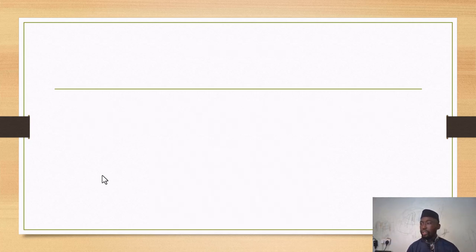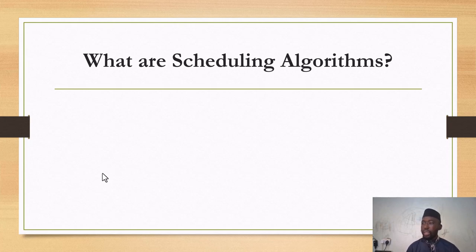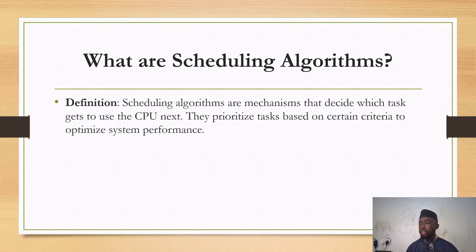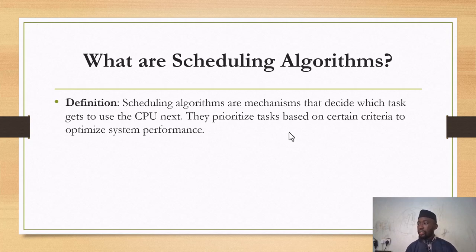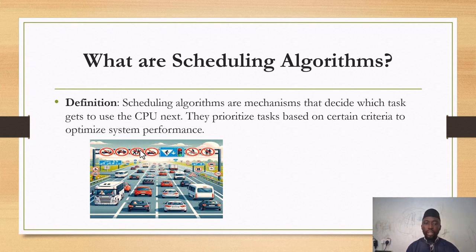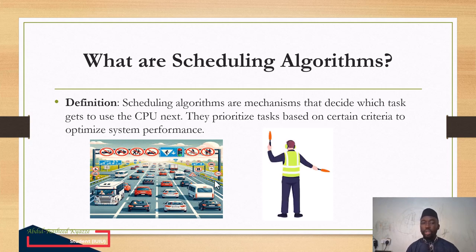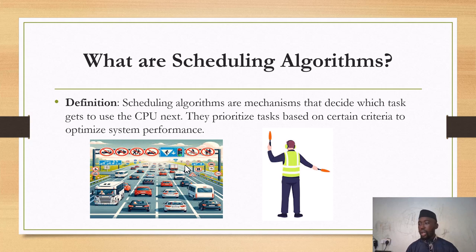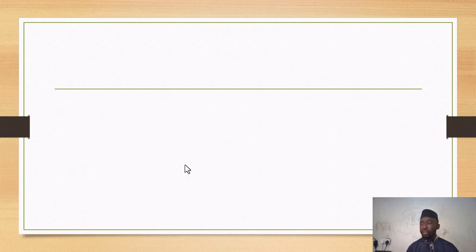There are different types of scheduling algorithms. But before that, we would like to know what scheduling algorithms are with at least a broad knowledge. Scheduling algorithms are mechanisms that decide which task gets to use the CPU next. They prioritize tasks based on certain criteria to optimize system performance. Take an example of a traffic jam — a traffic officer decides which car or vehicle takes which route. That is also how jobs are categorized or scheduled in a computer.